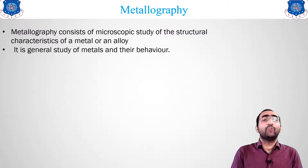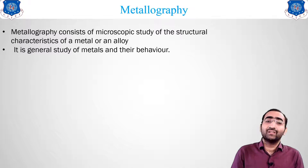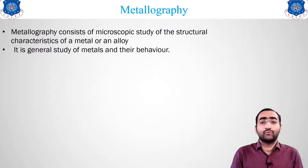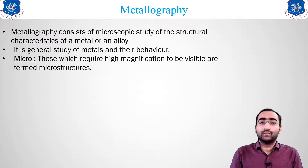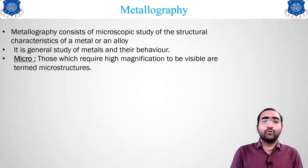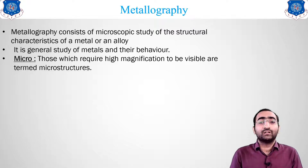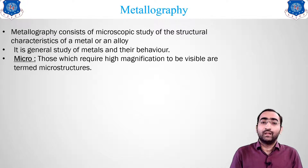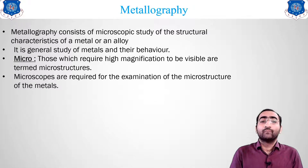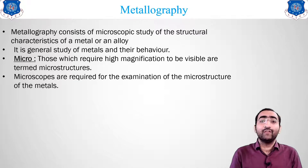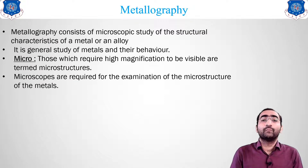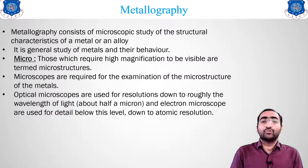Metallography basically deals with the general behavior of metals and alloys. There are two types: micro and macro. Micro means whatever structure you are seeing under the microscope — that is known as micro examination. It involves more magnification. Micro structures require detailed study, and they are always observed under the microscope.